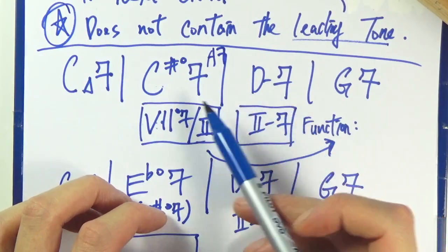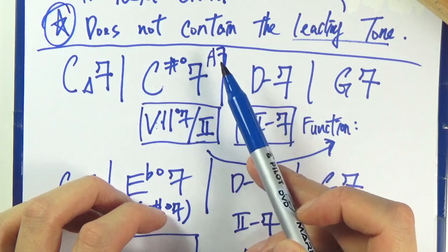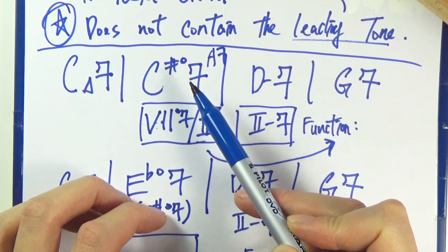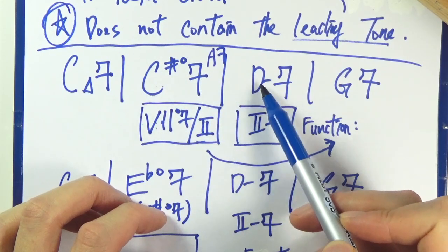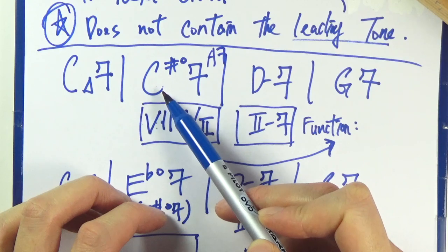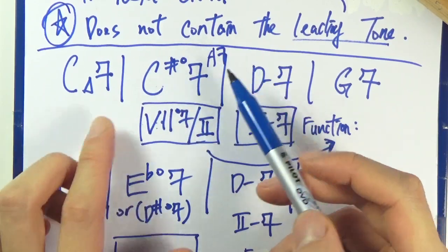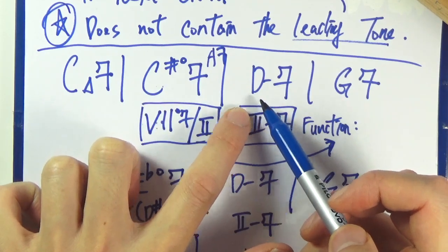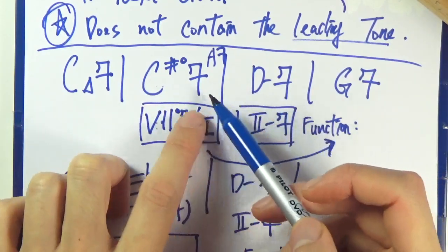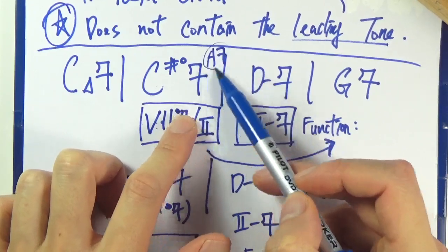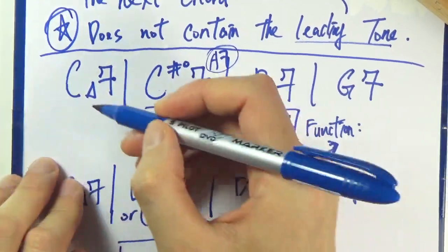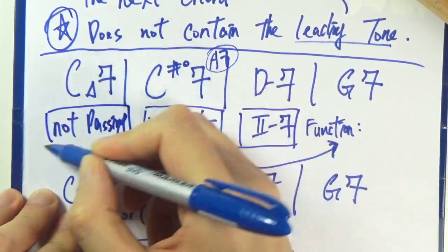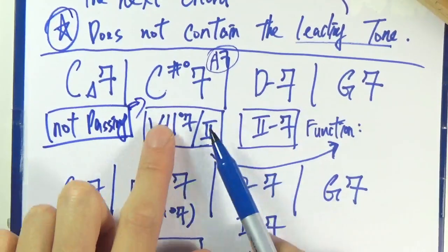and at this time we have a C sharp diminished 7 instead. So actually this is a substitution for A7. But when you're familiar with it enough, you can just go half a step down from D minor and play a C sharp diminished 7 here. So C sharp, the root of the chord, is exactly the leading tone of D, so this is the substitution for secondary dominant. So not a passing chord, not passing for this first chord progression.